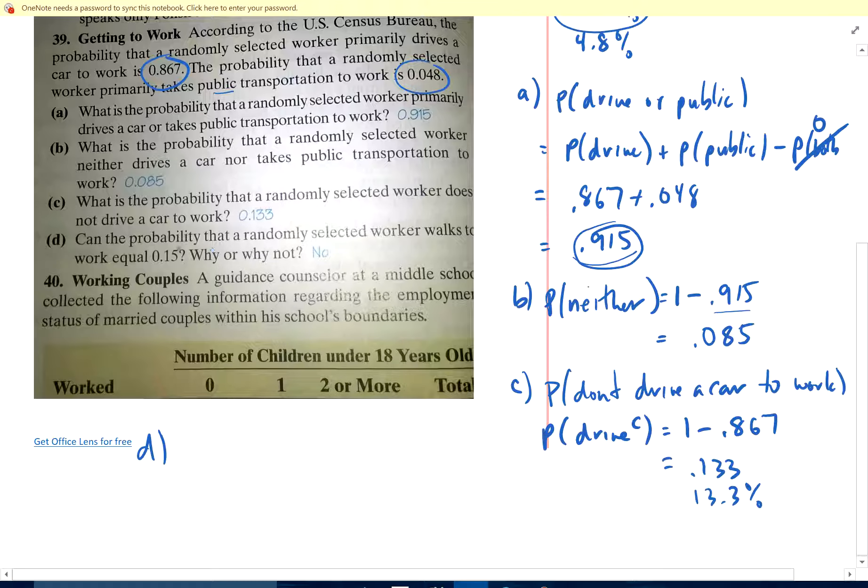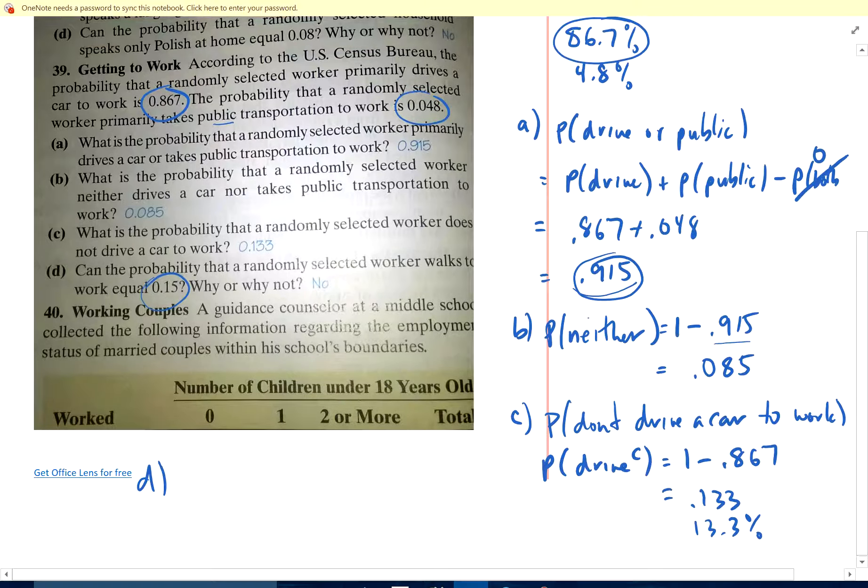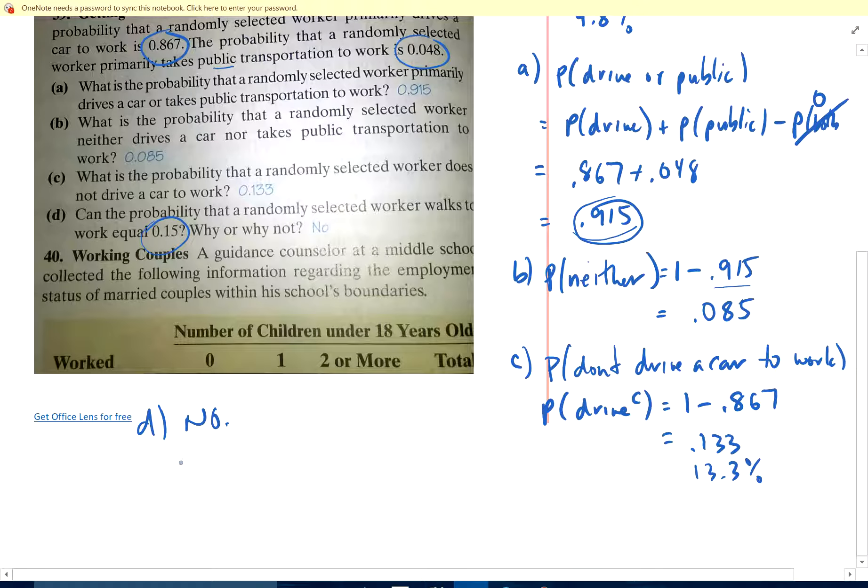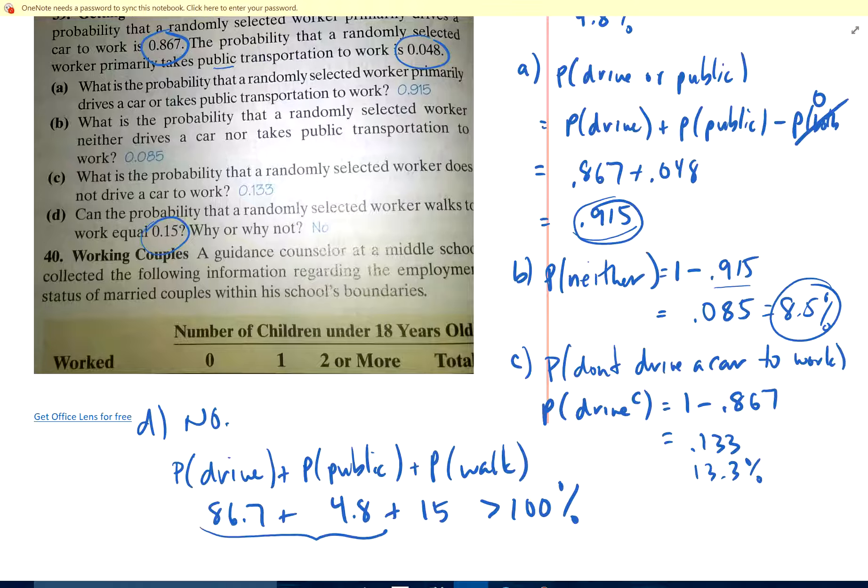And part D. Probability that a worker walks to work. Can the probability be 15%? Why or why not? Well, it can't be 15%, no. Because if it was 15%, then we would have probability of drive plus probability of public plus probability of walk would be 86.7 plus 4.8 plus 15%, which is greater than 100%. And that can't happen, right? The walk has to be less than what makes that 100%. It has to be less than 8.5%. Alright, there you have it.